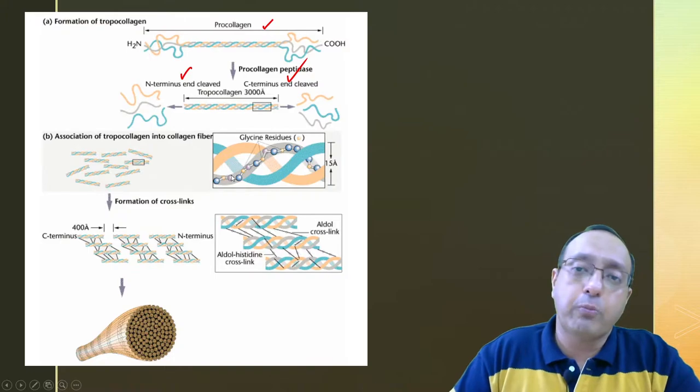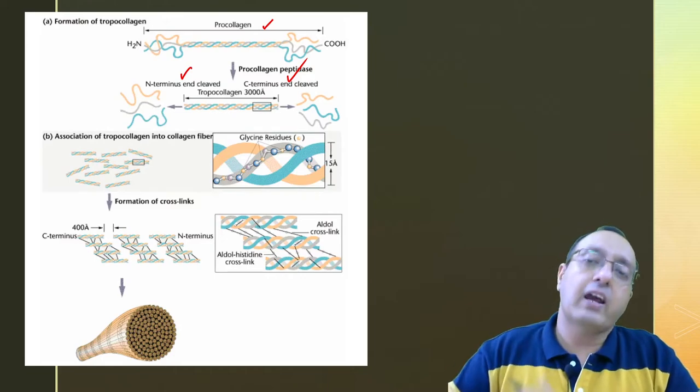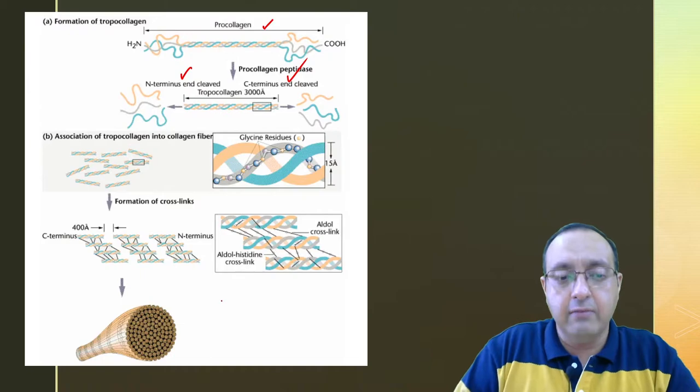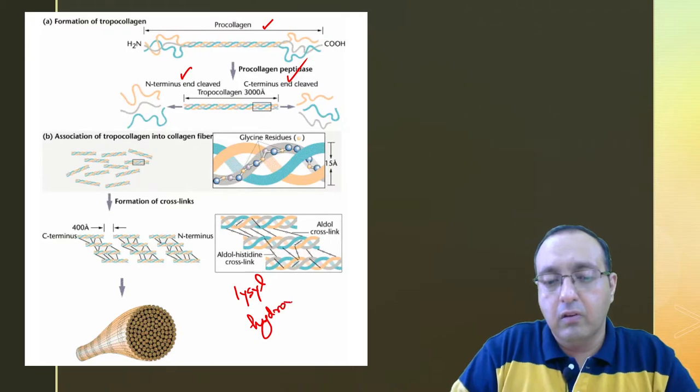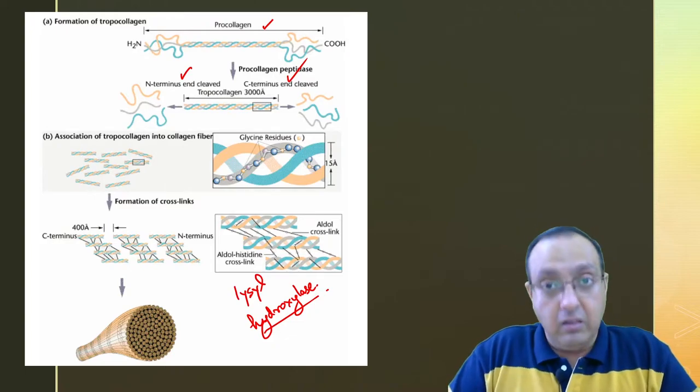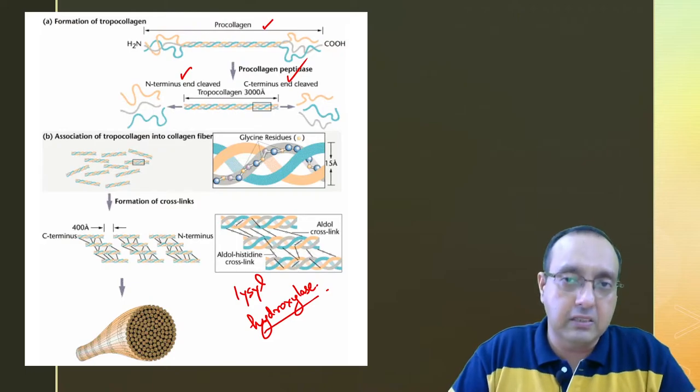And many of these tropocollagen molecules associate to form collagen fiber. And after that, it is secreted out and it gets cross-linked. And there is an enzyme which is called lysyl hydroxylase, which is involved in cross-linking of different tropocollagen fibers. And this leads to a remarkable amount of strength, but it also makes it a little bit brittle sometimes in the future.